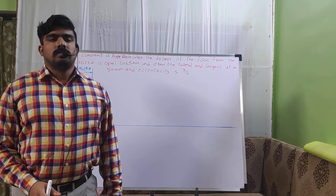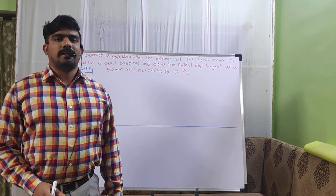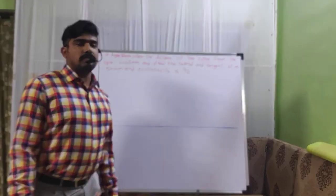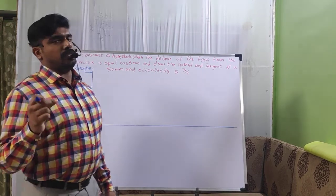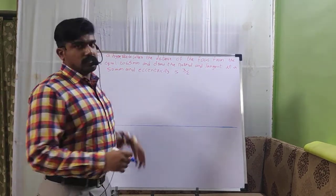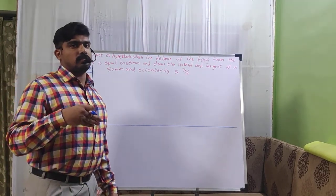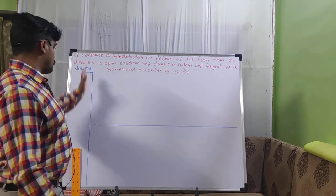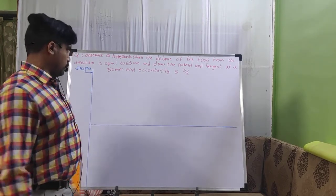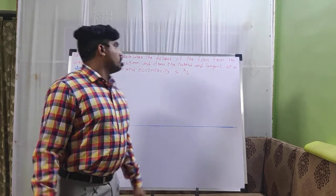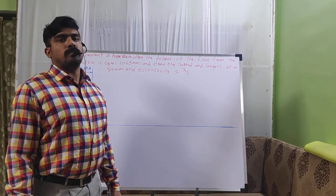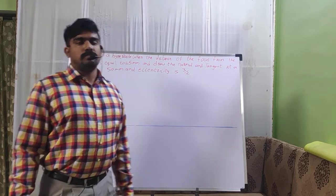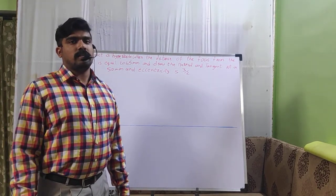The next problem is on the hyperbola. The question: construct a hyperbola when the distance of the focus — a fixed point F — from the directrix, which is a fixed straight line (the vertical line), is equal to 65 mm. Draw the normal and tangent at a distance of 50 mm. The eccentricity value is 3 by 2.